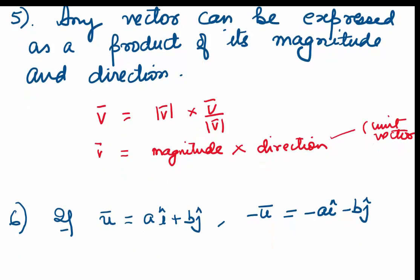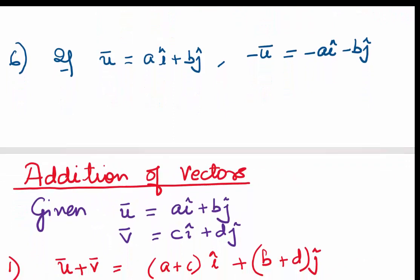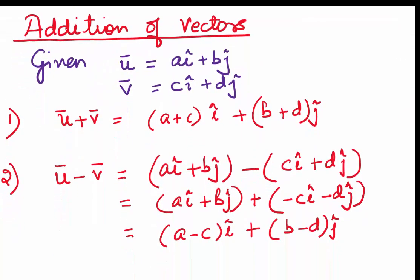Sixth point: if you have u as ai + bj, then minus u will always be minus ai minus bj — you multiply the minus to each component. Coming to vector addition: if u is ai + bj and v is ci + dj, then u plus v is nothing but (a+c)i + (b+d)j. And for subtraction, u minus v is nothing but (a−c)i + (b−d)j.